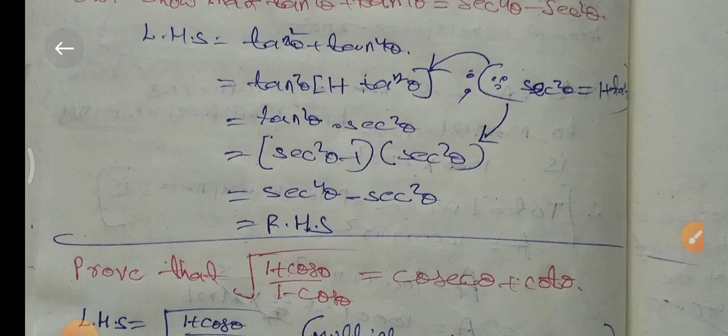Now tan²θ equals sec²θ minus 1 from the formula. Therefore substituting tan²θ as sec²θ minus 1, we get (sec²θ minus 1) times sec²θ, which equals sec⁴θ minus sec²θ, which equals the right hand side. Hence proved.